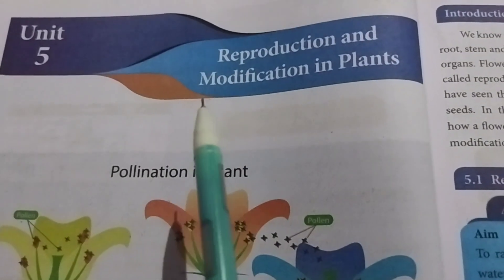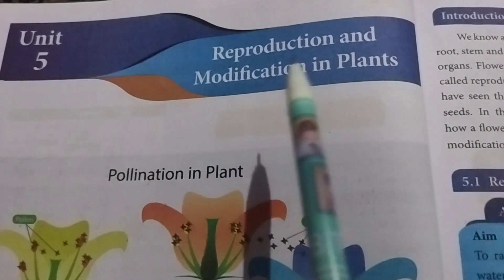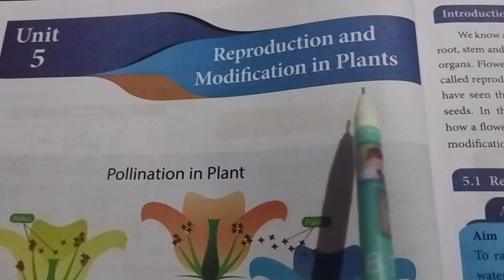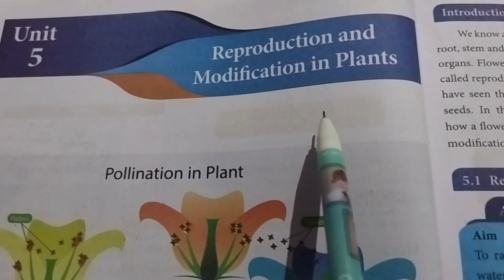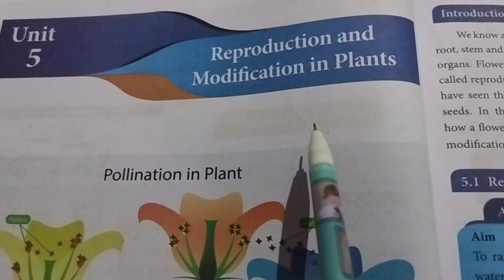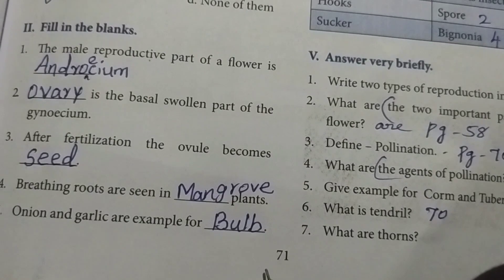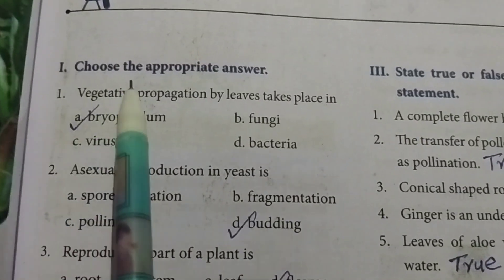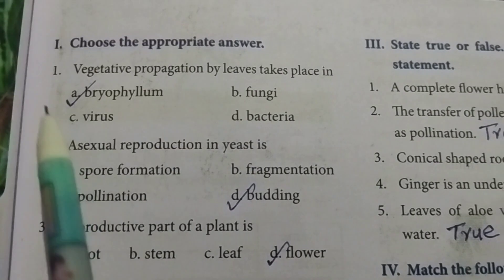7th Standard Science, Unit 5: Reproduction and Modification in Plants. The lesson on the book pack answers. Take page number 71, Roman numeral I: Choose the appropriate answer.